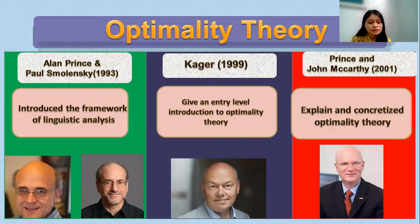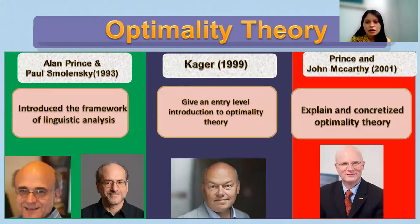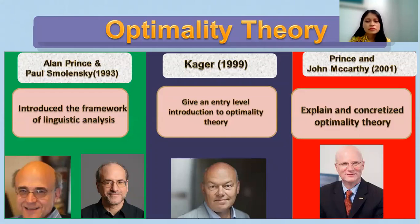They also created a book titled Constrained Interaction in Generative Grammar. Moving to 1999, Kager came to explain and concretize optimality theory. They created a book with the title Optimality Theory.